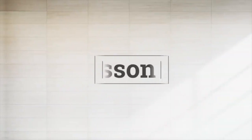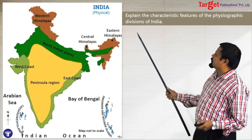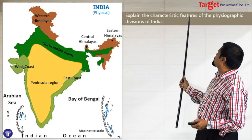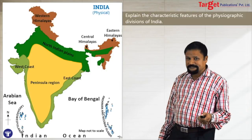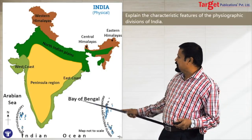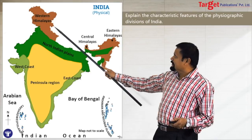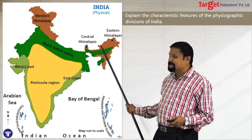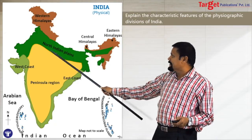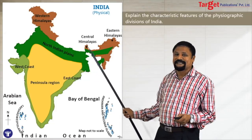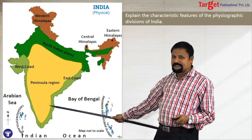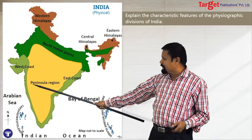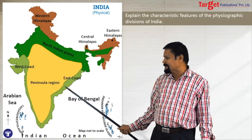In the next question — lesson number three — the question is about explaining the characteristic features of the physical divisions of India. As you know, there are five physical divisions. You can draw the stencil, then show: first, the Himalayas; second, the North Indian Plain; third, the Peninsula region; and fourth, the west coast and east coast, which are the coastal plains.